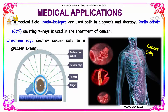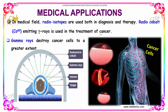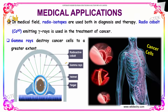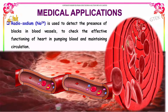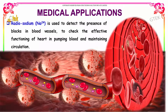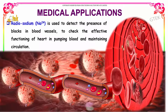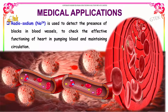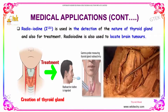Radio cobalt, which emits gamma rays, is used in the treatment of cancers, as gamma rays destroy cancer cells to a greater extent. Radio sodium is used to detect the presence of blocks in the blood vessels and to check the effective functioning of the heart in pumping blood and maintaining circulation.